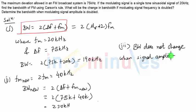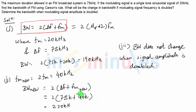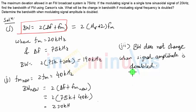This was a simple question where Δf and fm were given and we had to find bandwidth using Carson's rule. As you can see, if the modulating signal frequency doubles, the bandwidth increases. But when the signal amplitude is doubled, the bandwidth does not change, because Δf was a constant value and changing the amplitude does not change the frequency — and therefore does not change the bandwidth.